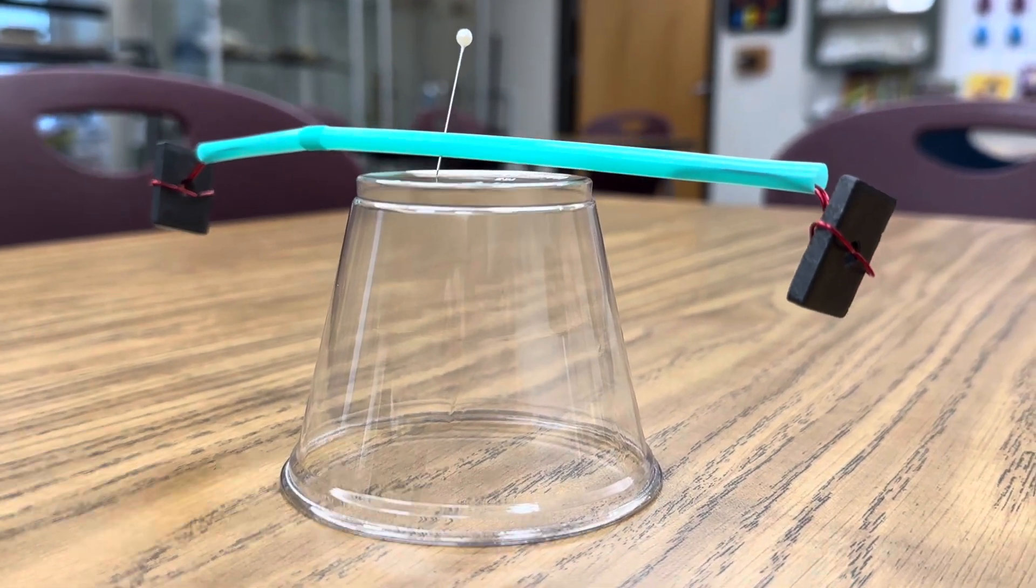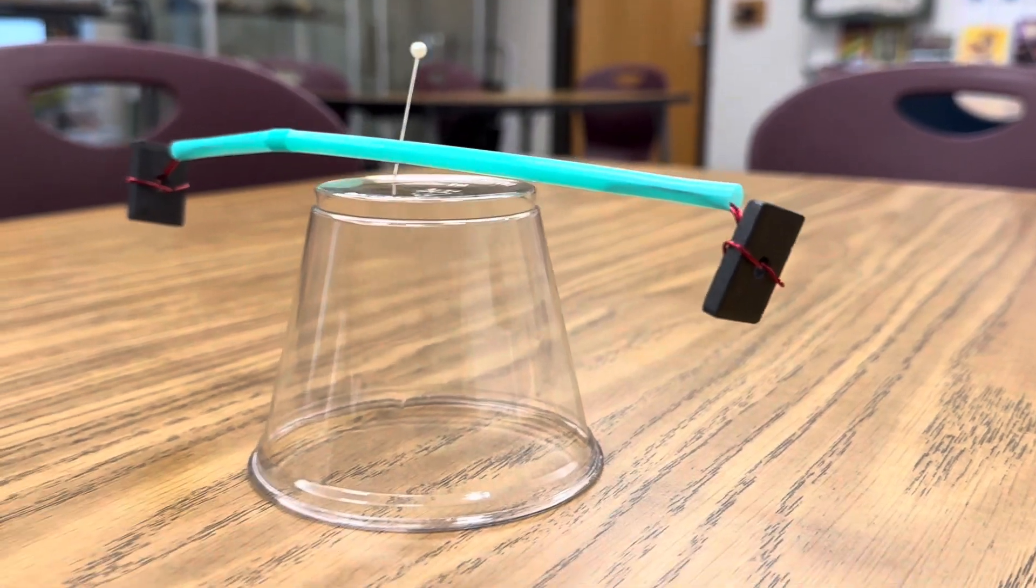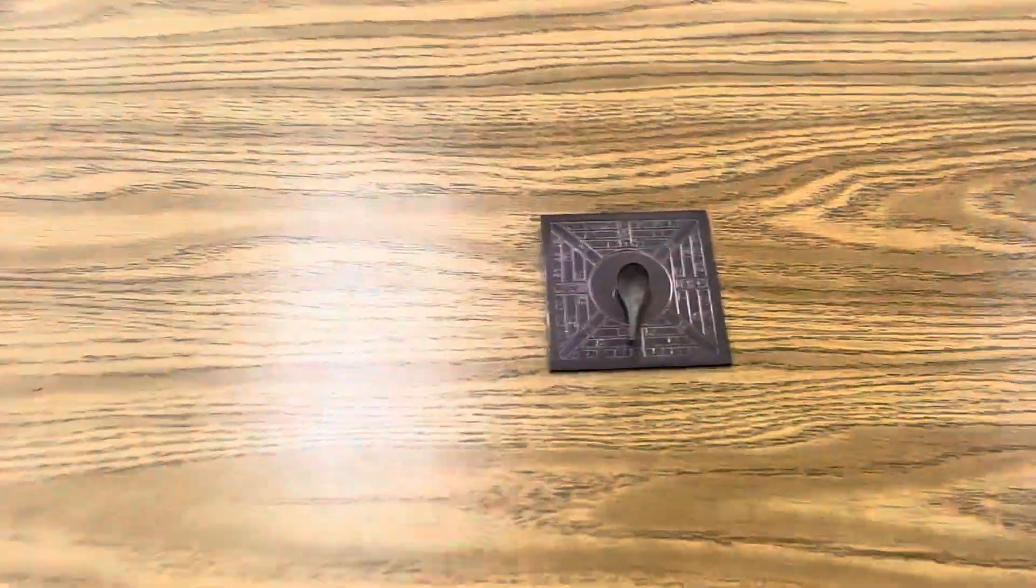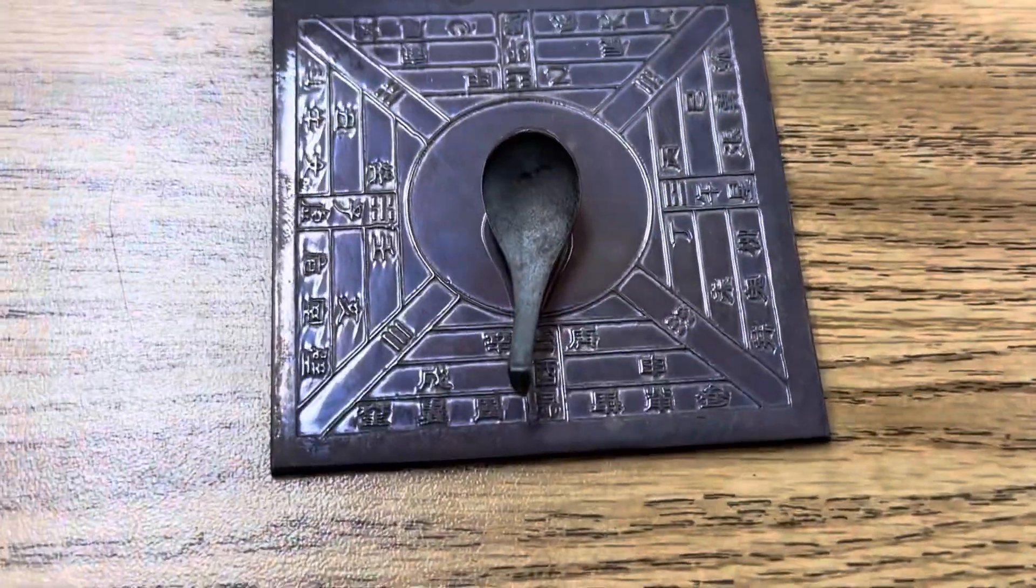Now notice that this end here is pointing south and I can compare it to my south pointer over on this table and you can see that the handle here is pointing in the same direction.